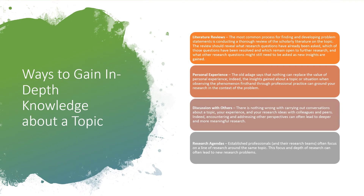So here are some ways to gain in-depth knowledge about a topic. Obviously, literature reviews. The most common process for finding and developing problem statements is conducting a thorough review of the scholarly literature on the topic. The review should reveal what research questions have already been asked, which of those questions have been resolved, which may remain open to further research, and what other questions might still need to be asked as new insights are gained.